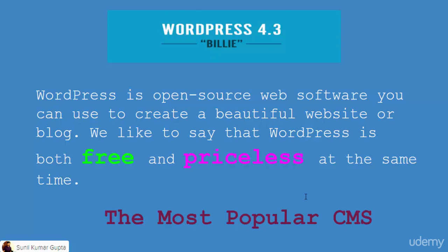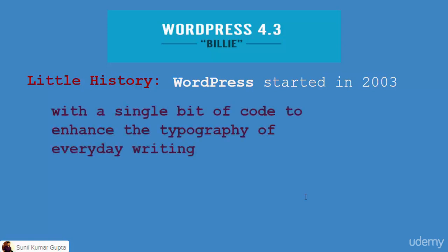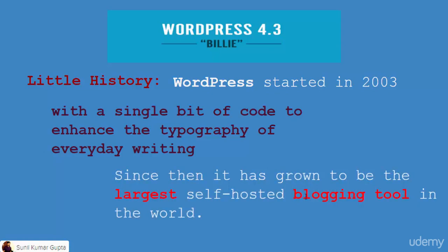That's why it is loved by all and is the most popular content management system — far better than all other CMS available. A little history: WordPress started in 2003 with a single bit of code to enhance the typography of everyday writing and publishing. It was aimed to simplify writing blog posts and publishing content on the web.